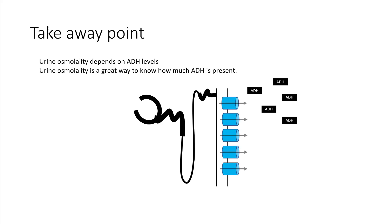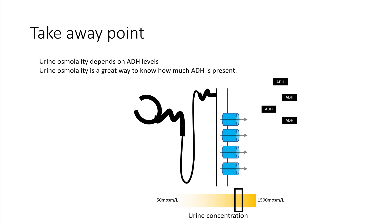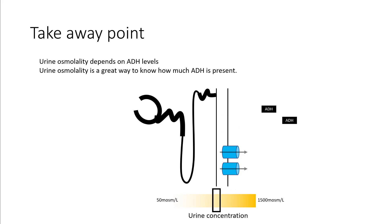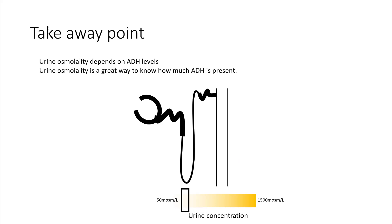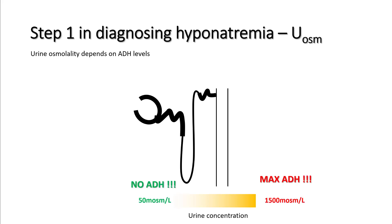The takeaway point is: urine osmolality depends on ADH level and is a great way to know how much ADH is present. If you have a lot of ADH there will be many aquaporin molecules and you make very concentrated urine — the maximum concentrating capacity of the kidneys is 1500 milliosmoles per liter. As ADH drops, aquaporin molecules disappear and you make more and more dilute urine.